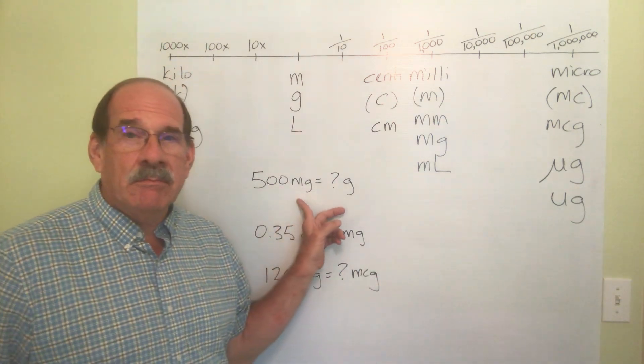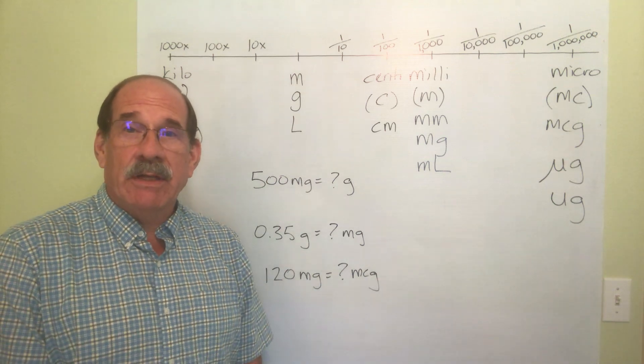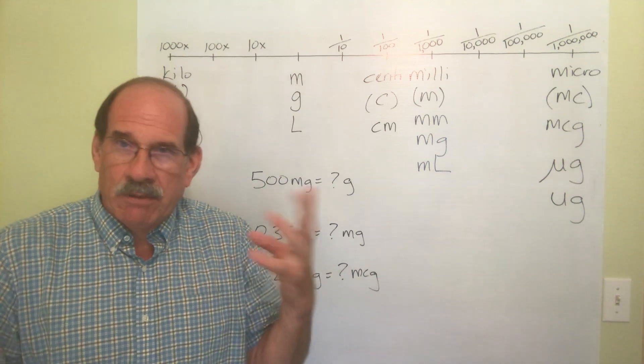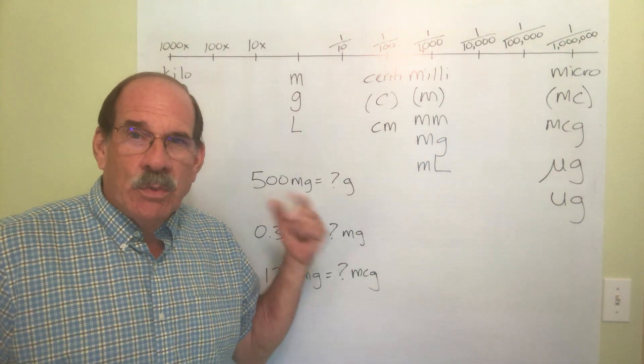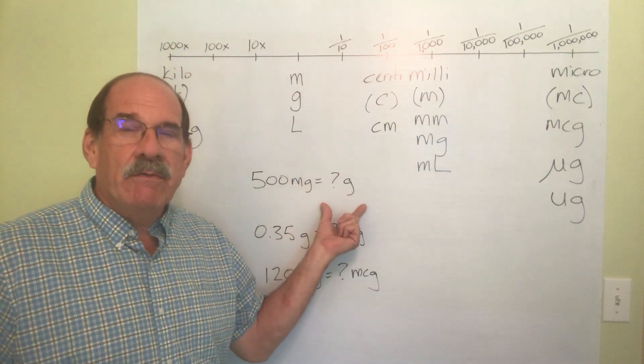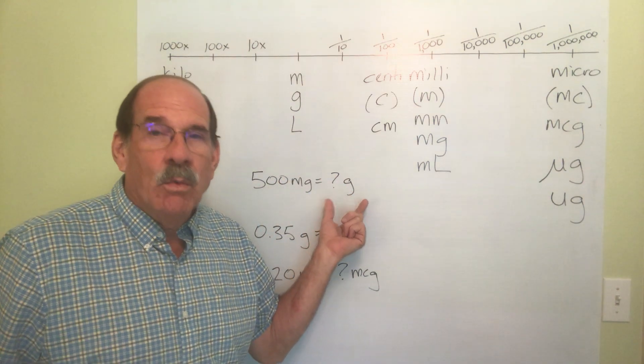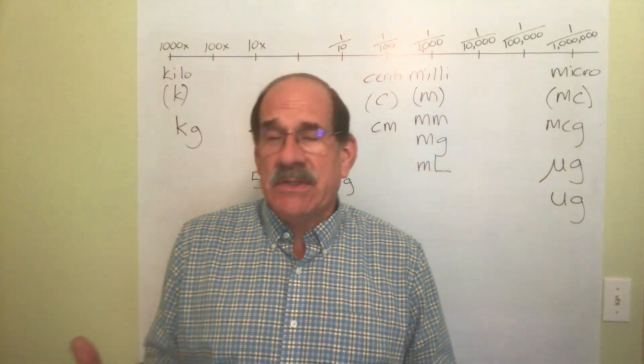Okay, right here you've got this pill and it says it's a 500 milligram tablet of some medicine. It's 500 milligrams, but you need to know how many grams is that the same thing as. So we need to convert 500 milligrams into the equivalent number of grams.